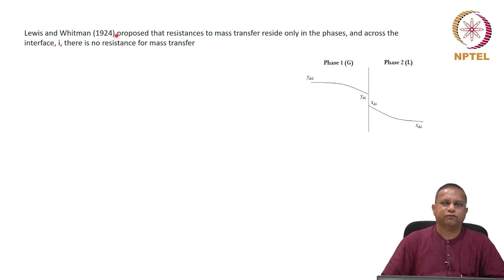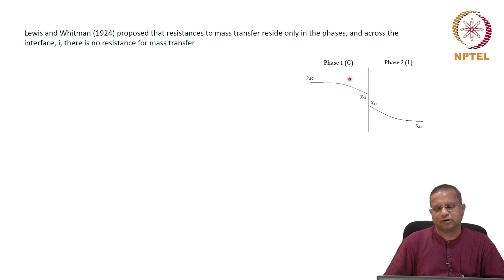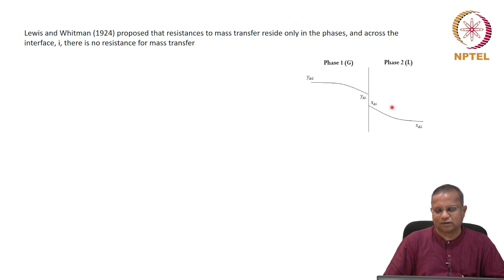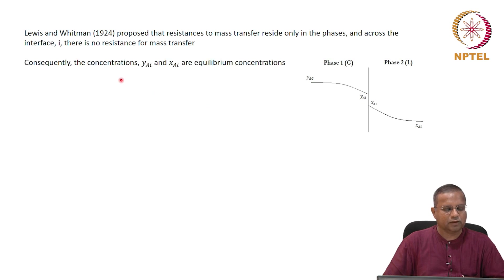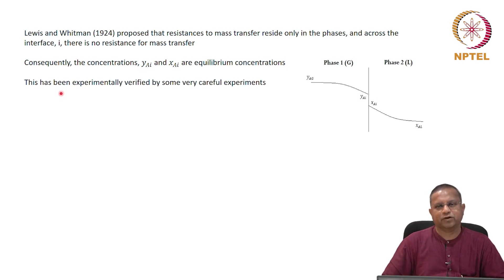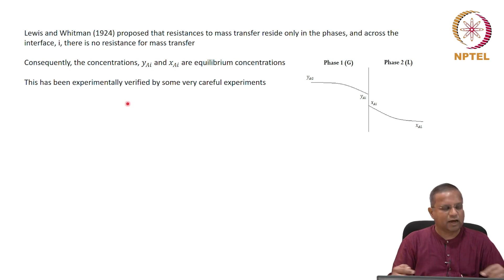Lewis and Whitman, way back in 1924, proposed that the resistances to mass transfer reside only in the phases, and across the interface there is no resistance to mass transfer. This means the change in concentrations happens slowly in the bulk phases but instantaneously at the interface. Because of that, at the interface the gas phase and the liquid phase can be considered to be in equilibrium. Consequently, yai and xai at the interface are equilibrium concentrations. This has actually been verified by very careful experiments — the gas phase concentration and the liquid phase concentration are indeed at equilibrium values at the interface.